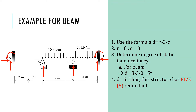We will use r minus 3 minus c to determine the d for the beam. This beam has eight support reactions, and there is no hinge in the system. Therefore, c is equal to zero. Putting this into the equation, we obtain d equal to 5 degrees. This indicates that this structure has five redundant forces.